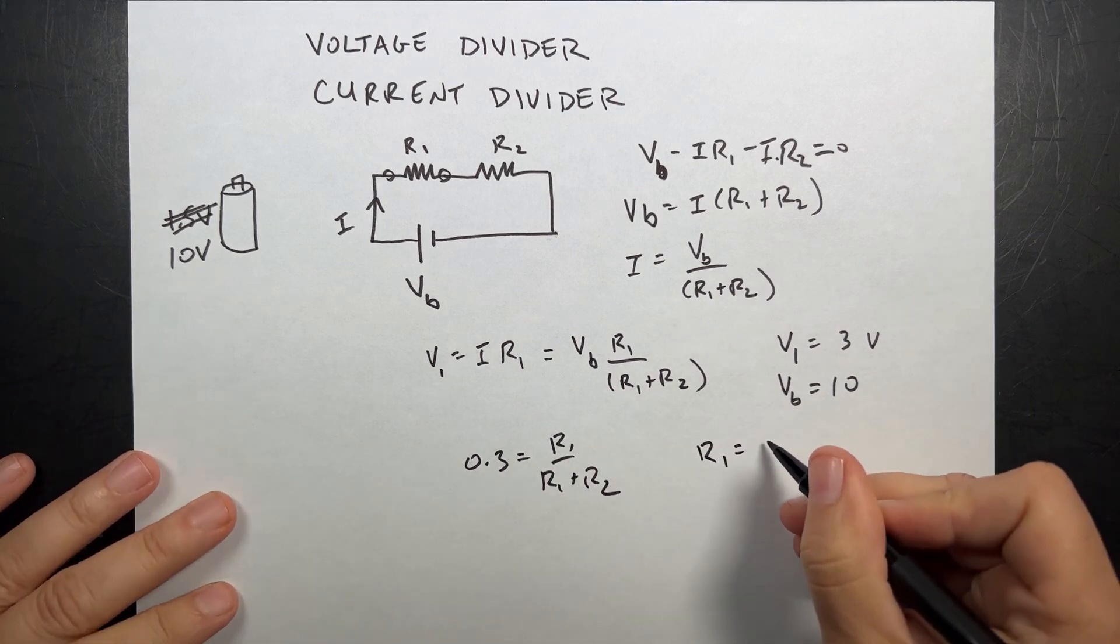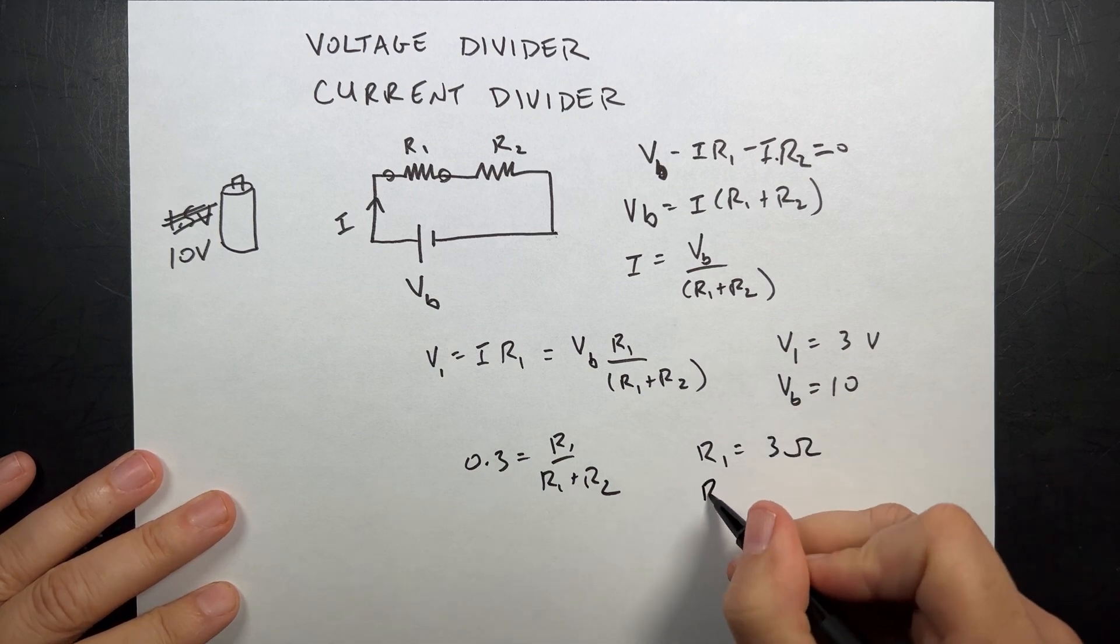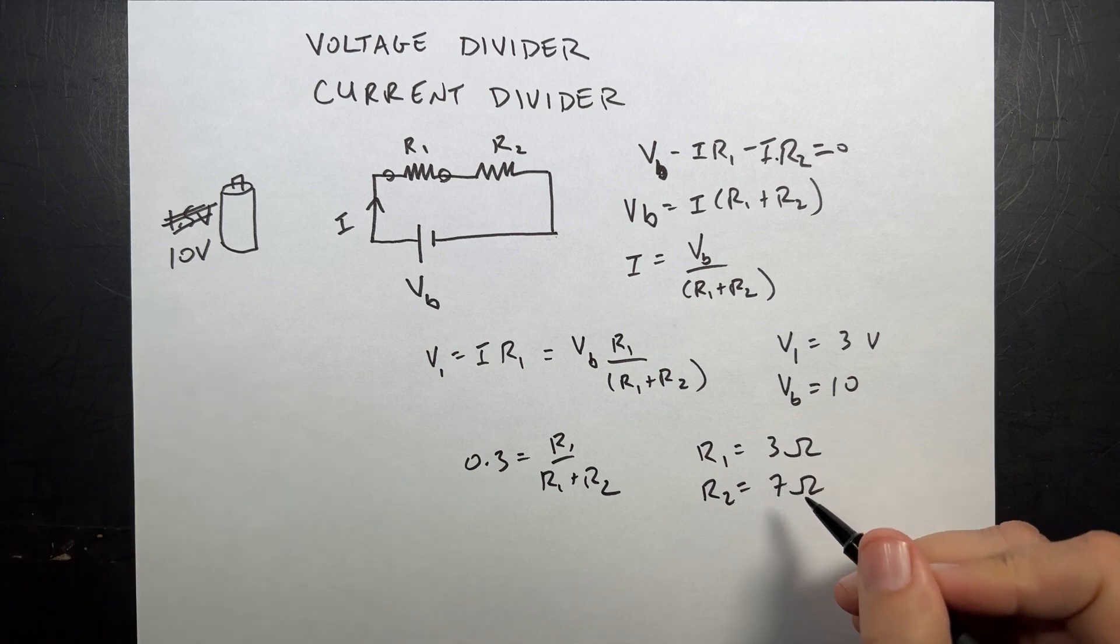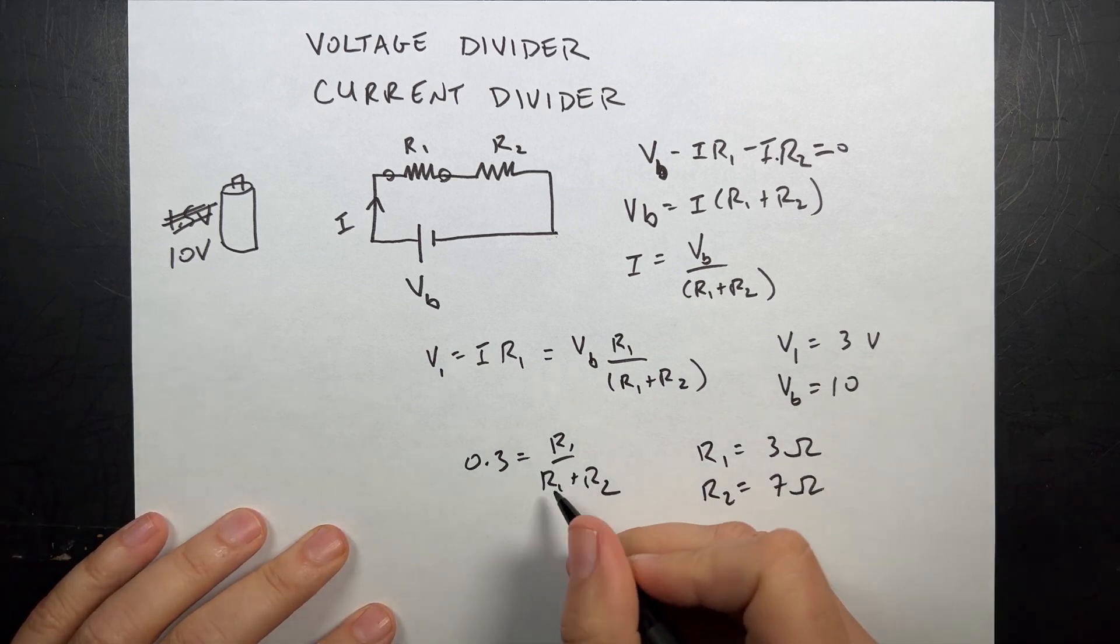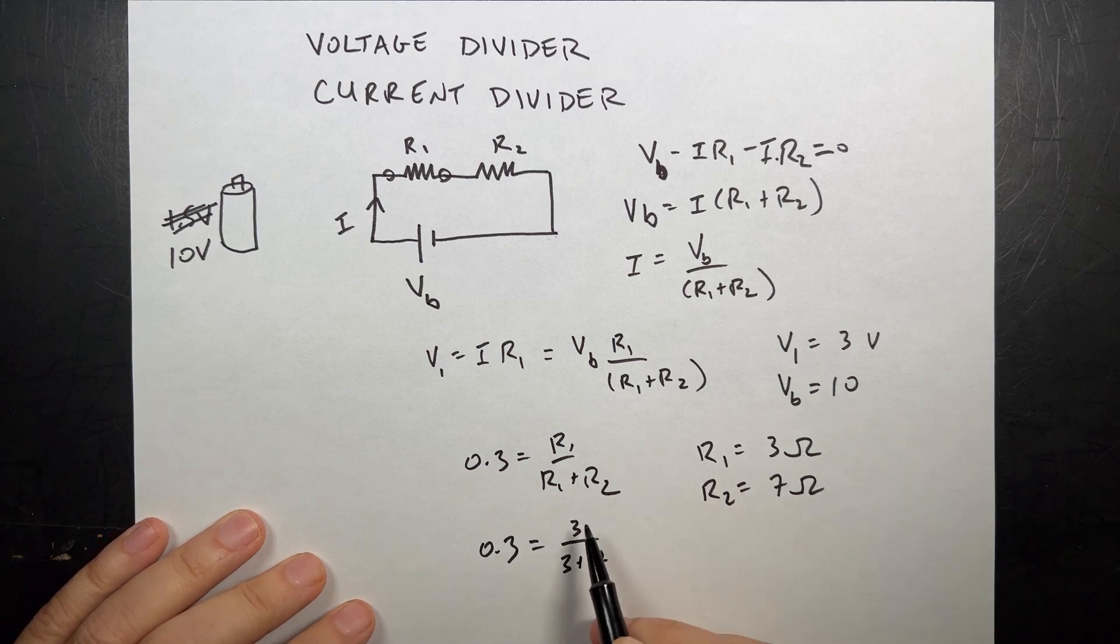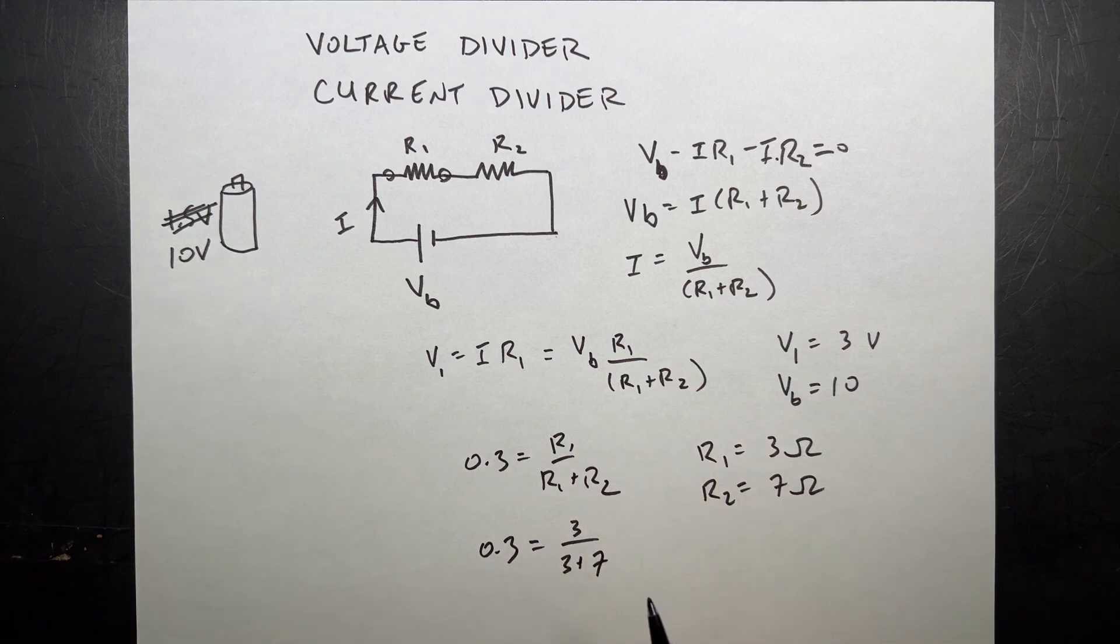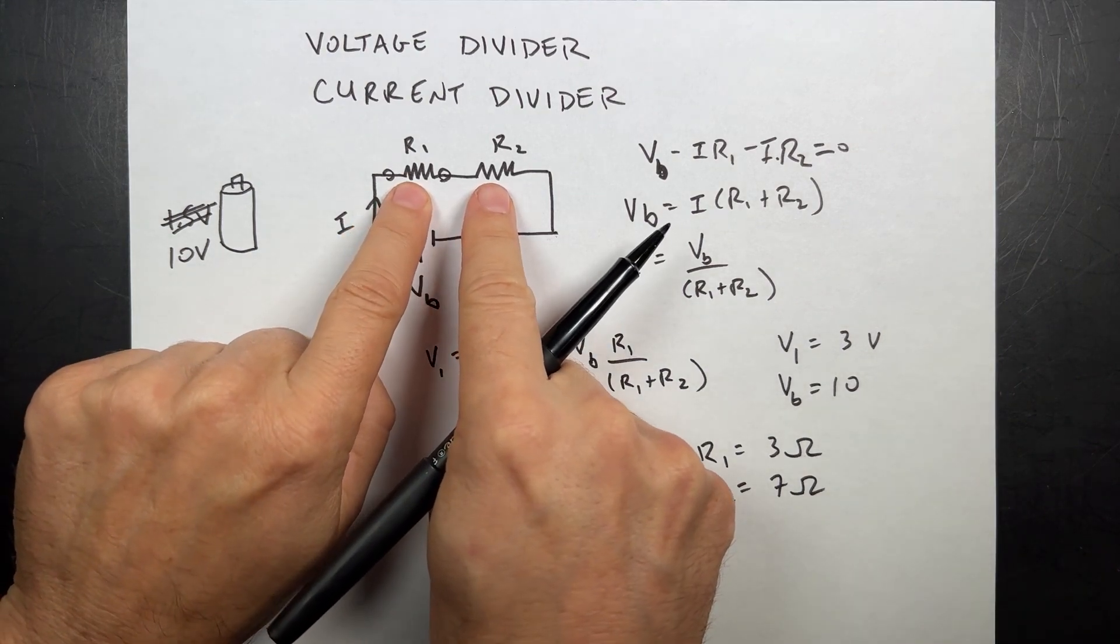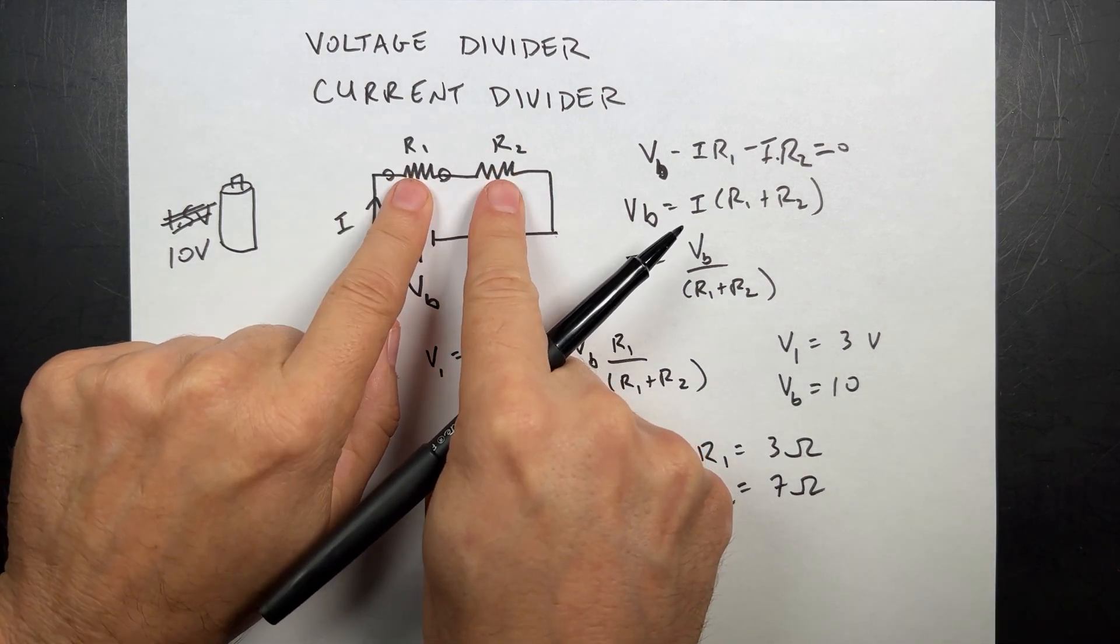So if I say R1 equals 3 ohms and R2 equals 7 ohms, you notice that 3 plus 7 is 10, then I'm going to get 0.3 is 3 over 3 plus 7. So 3 over 10 is 0.3, so it works. So this divides the voltage relative to these two values.